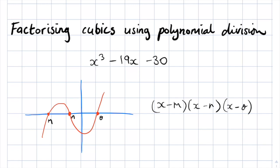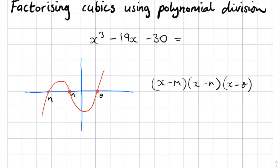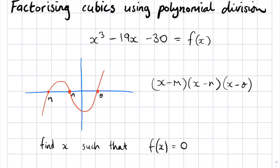Unlike quadratics, a cubic will always have at least one x-intercept. Our hope is that intercept is an integer value so we can find it. We could have a case with only one intercept, but we'll get at least one. We treat the cubic as f(x) and look for values of x such that f(x) equals zero. If f(x₁) equals zero, then x minus x₁ is a factor.